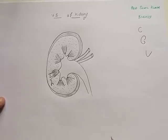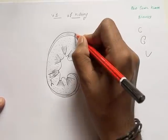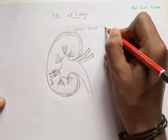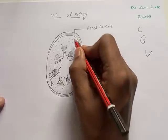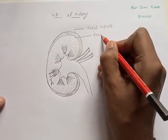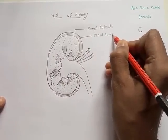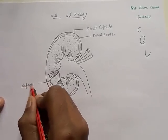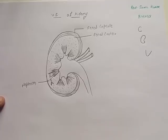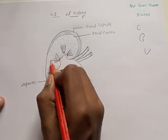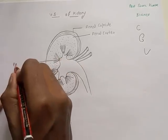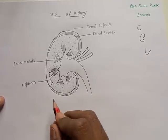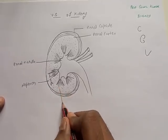This is how you draw the VS of kidney. For labeling: the outermost covering is called the renal capsule. The kidney has two regions — the outer region is called the renal cortex, which is dark, dense, and granular because it contains nephrons, which are the structural and functional unit of our excretory system.